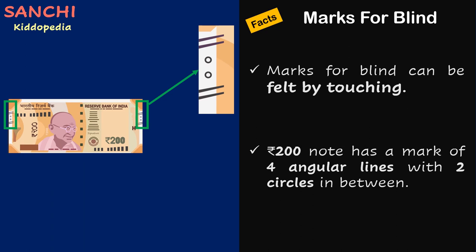Facts time! Marks for the blind can be felt by touching. The rupee 200 note has a mark of 4 angular lines with 2 circles in between.